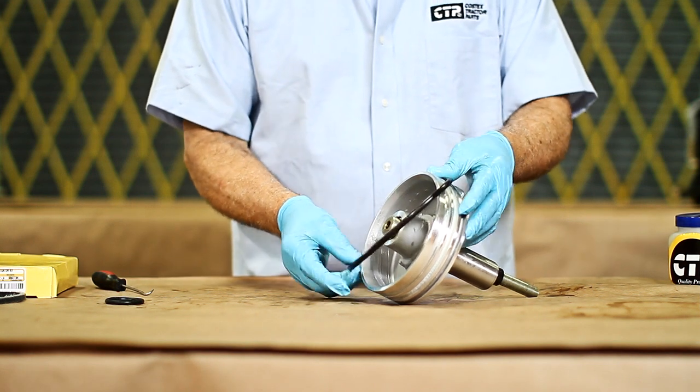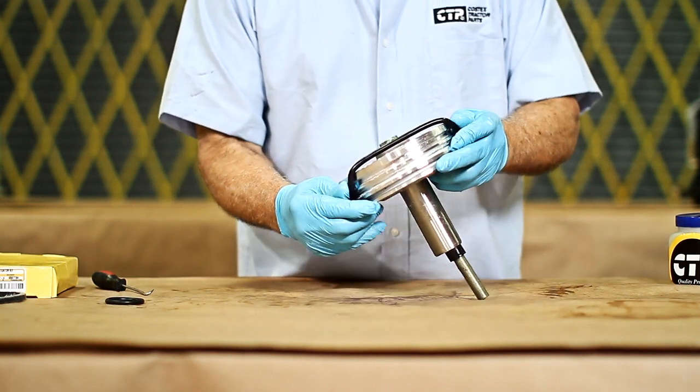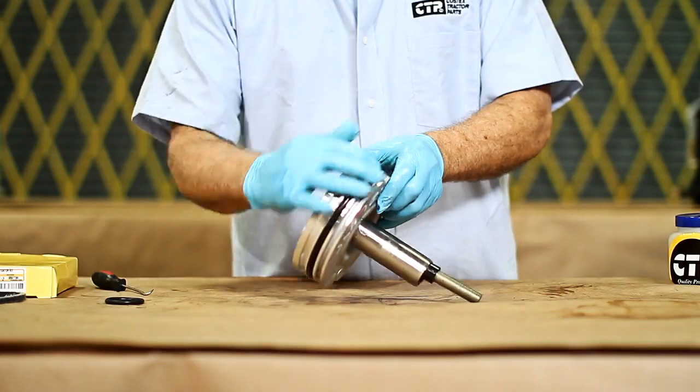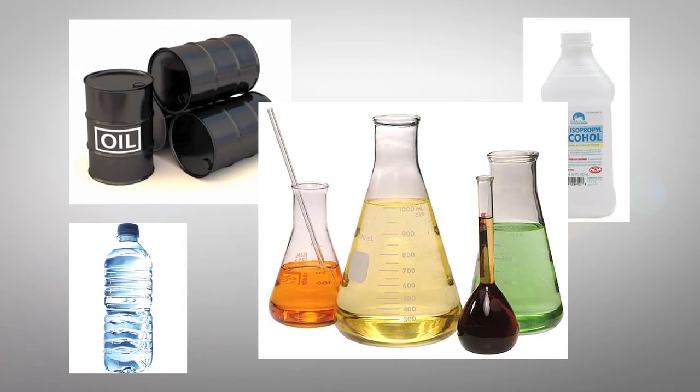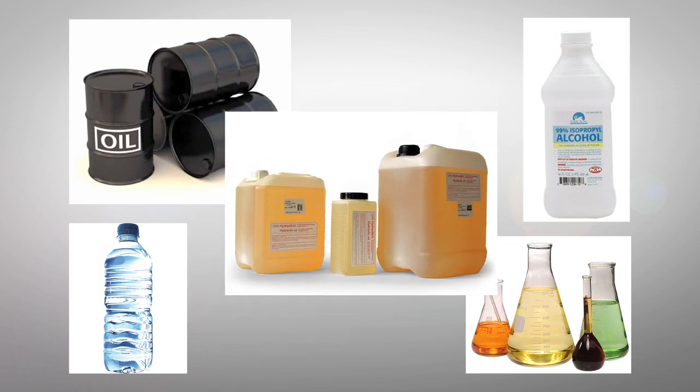CTP O-ring seals provide that tight seal closure needed for all components to function and maintain the oil, alcohol, water, chemicals, and even hydraulic fluids in place.